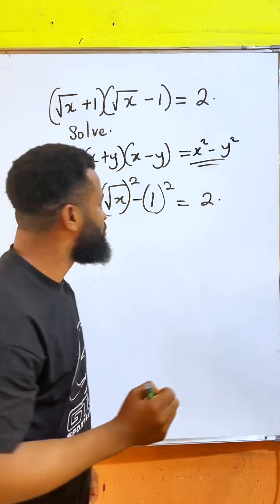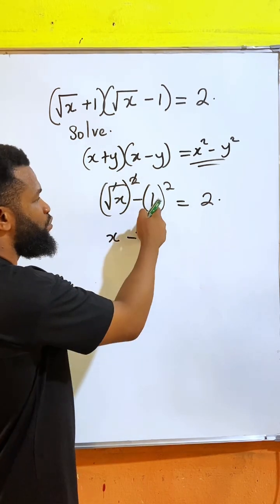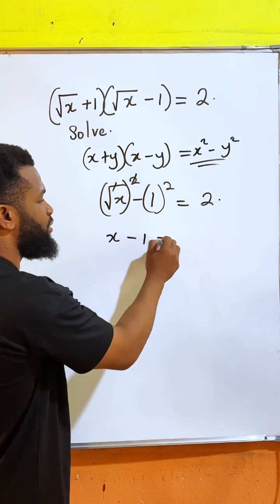So if I do this, the square roots will cancel. I'll have x minus 1 equal to 2.